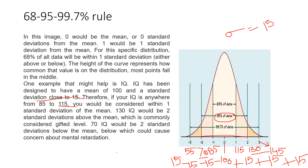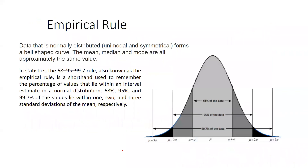So the 68-95-99.7 rule is clear. This is why we call it the empirical rule: data that is normally distributed is unimodal and symmetrical — unimodal means concentrated at one peak, and symmetrical means equally distributed on both sides — forming a bell-shaped curve. The mean, median, and mode are all approximately the same value. The empirical rule is a shorthand used to remember that 68%, 95%, and 99.7% of values lie within 1, 2, and 3 standard deviations of the mean respectively.